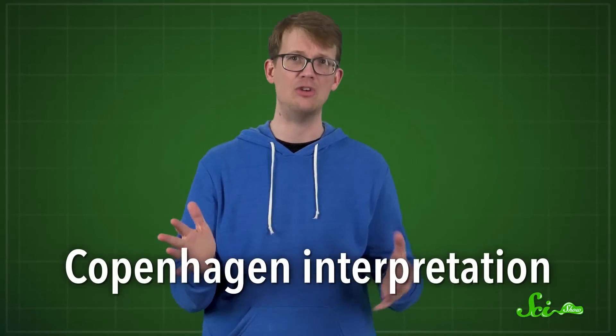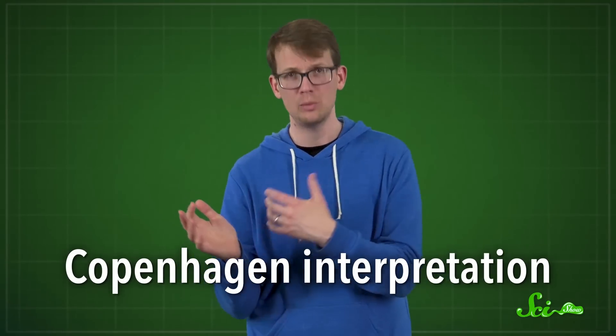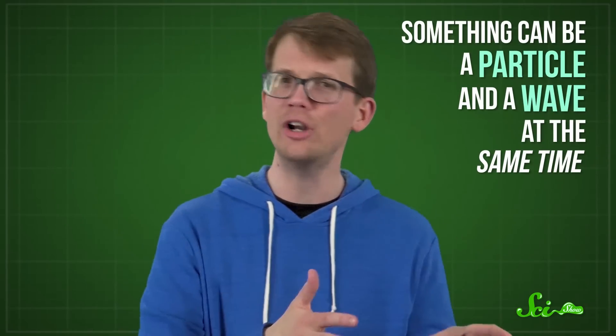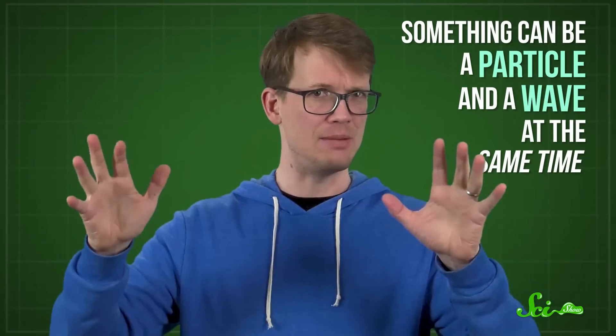So the conventional interpretation of quantum mechanics is called the Copenhagen interpretation, after the institute where it was devised in the 1920s. It includes a lot of the more well-known ideas around quantum mechanics, like that something can be a particle and a wave at the same time.